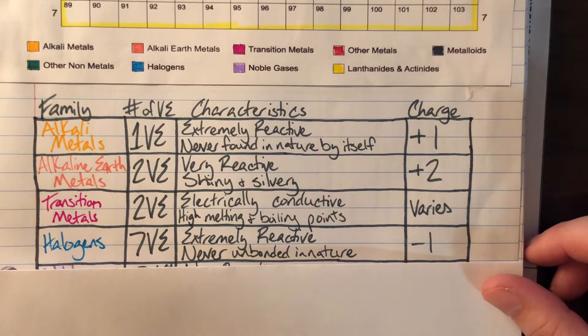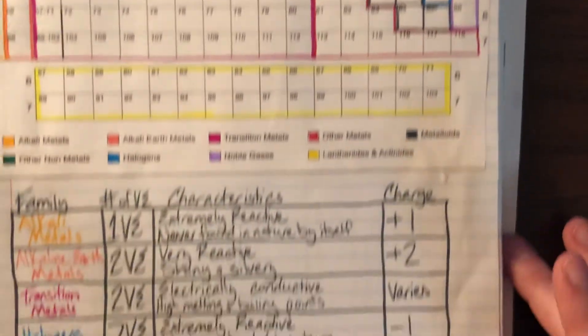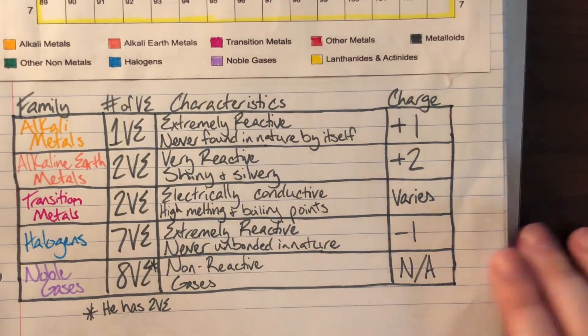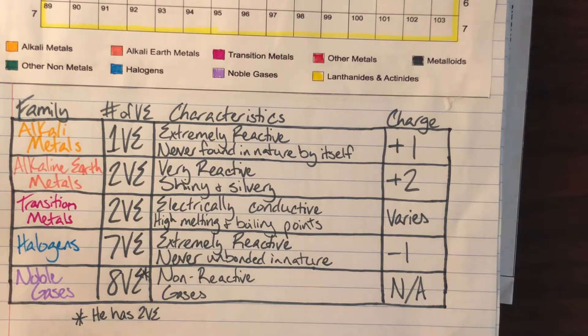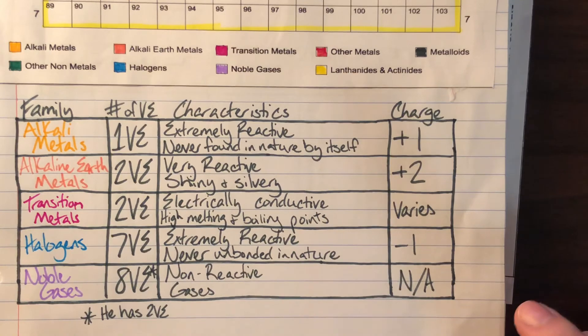That brings us to our final family: noble gases. Noble gases are in column 8 and, with the exception of helium, have 8 valence electrons. They are extremely non-reactive gases. That non-reactive part means even if someone tries to steal an electron from them, they won't give up or take any electrons. They're like, stay in your lane, don't talk to me. Since they don't take or give away electrons, they have no charge.